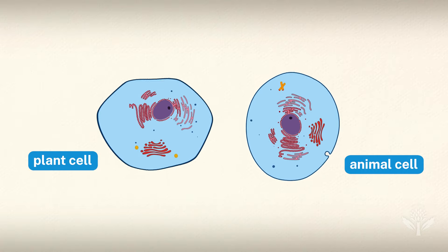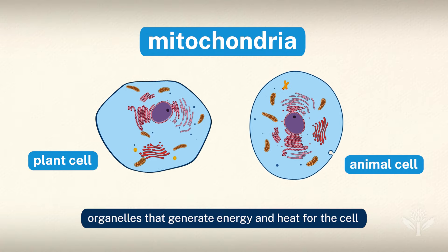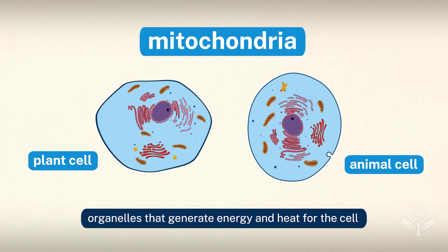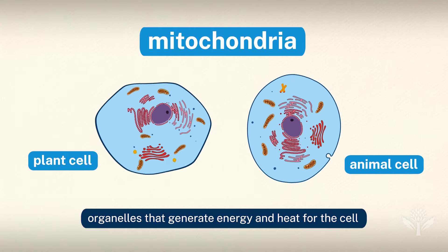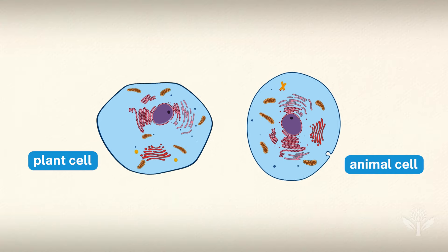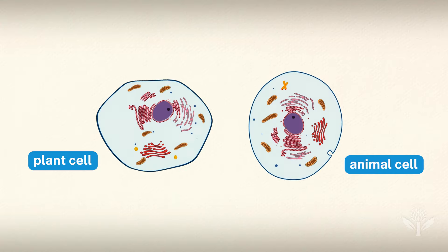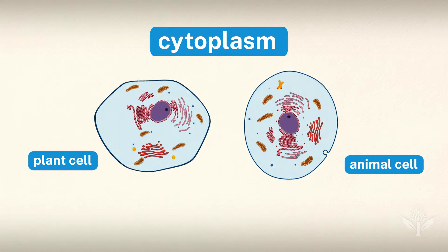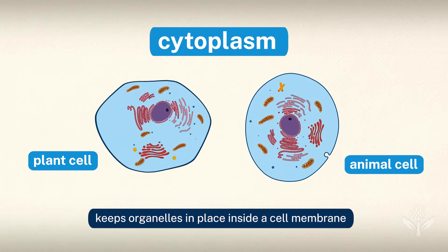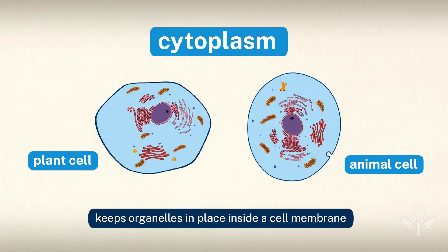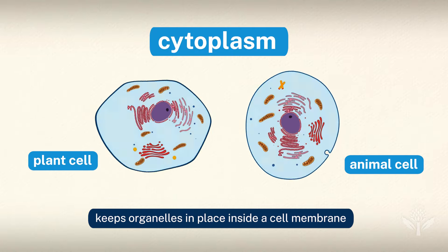Both plant and animal cells have mitochondria, organelles that generate energy and heat for the cell. Surrounding the organelles is a semi-fluid substance called cytoplasm that keeps them in place inside a cell membrane, the barrier that separates one cell from another.